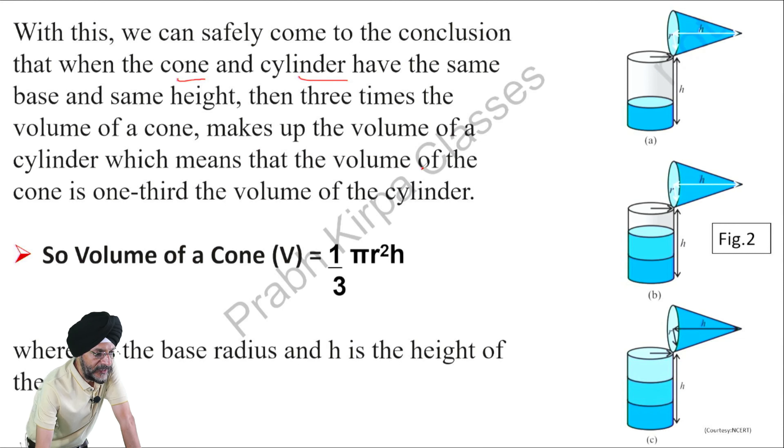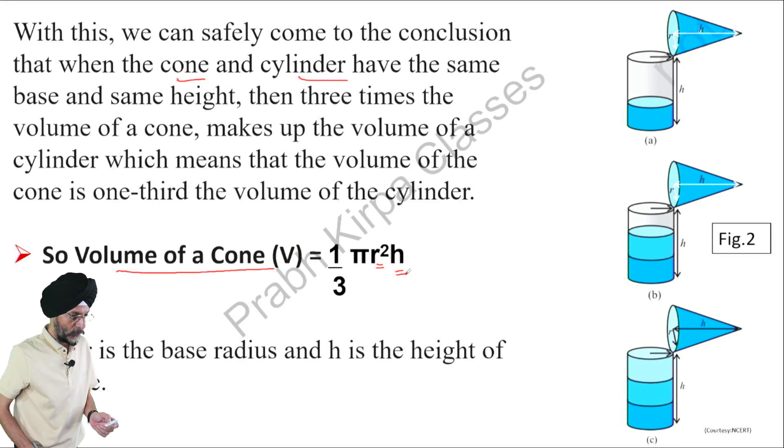In other words, we can say that volume of the cone is one-third the volume of the cylinder. So, volume of the cone is V = 1/3 πr²h, where r is the base radius and h is the height of the cone.